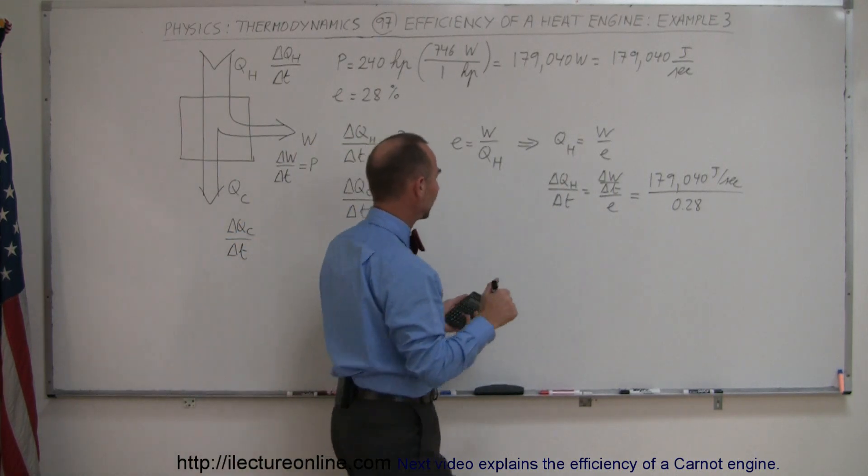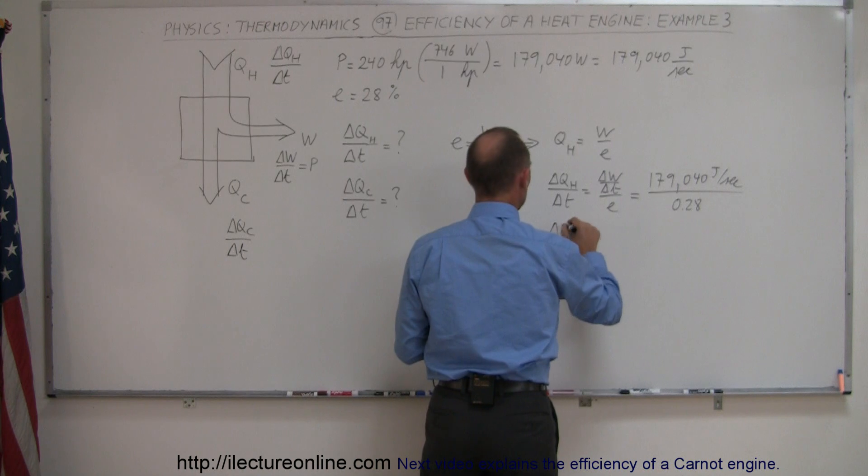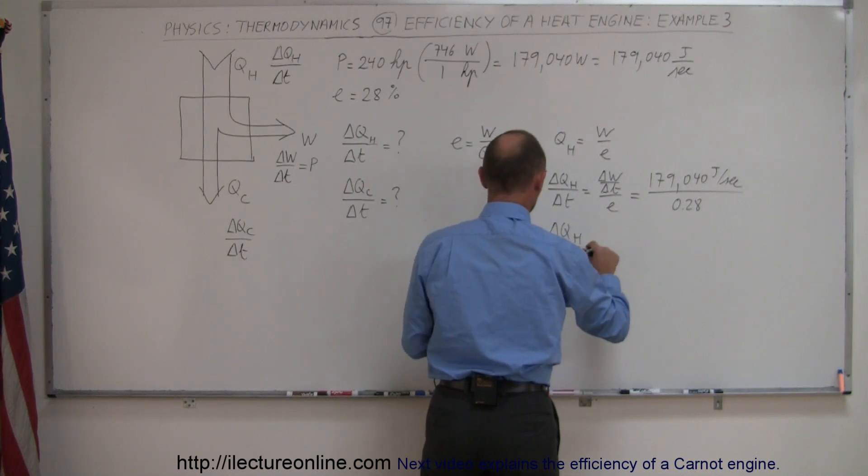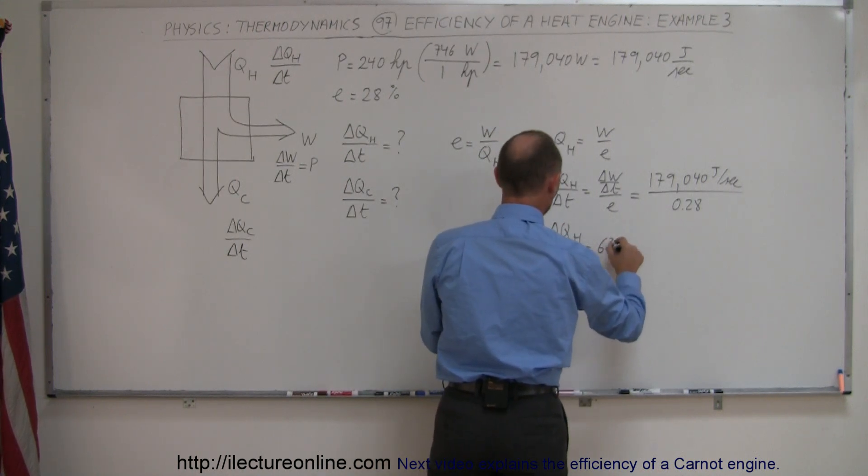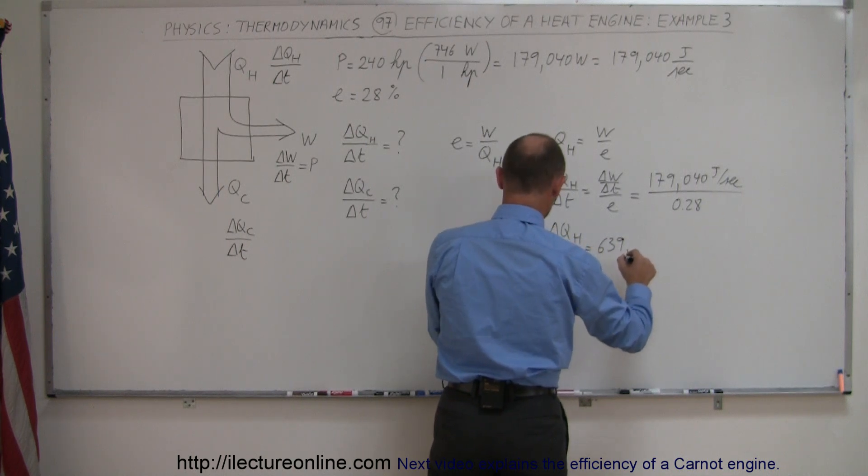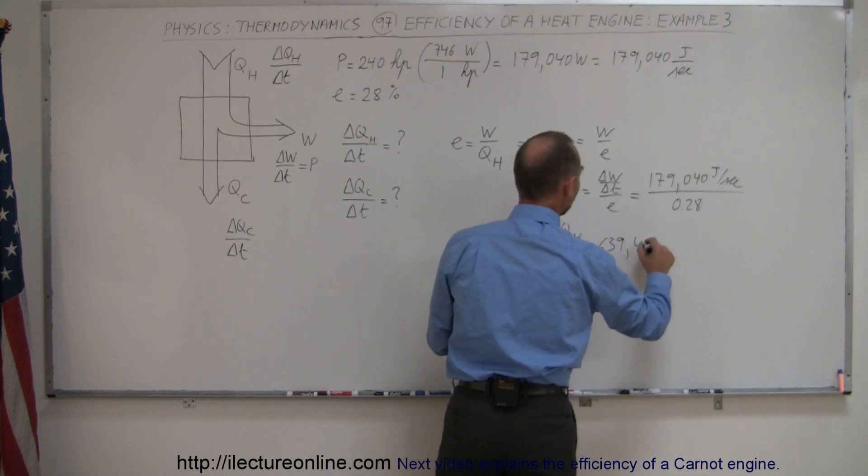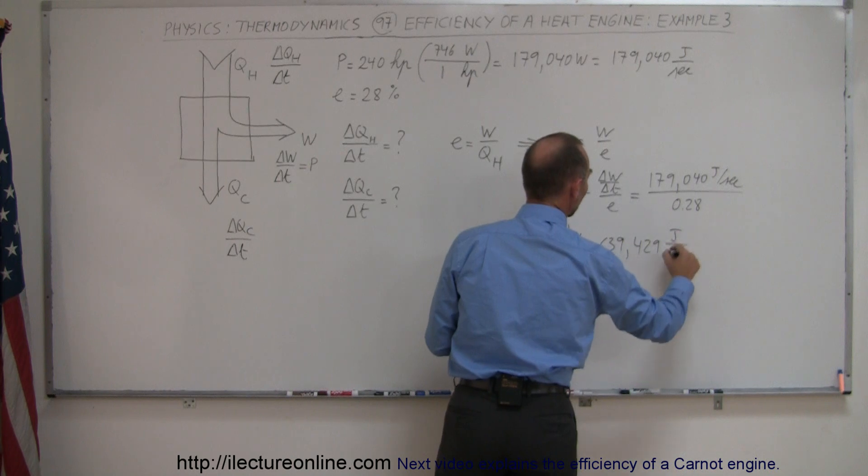and we get the heat extracted per unit time from the hot reservoir is therefore equal to 639,429 joules per second.